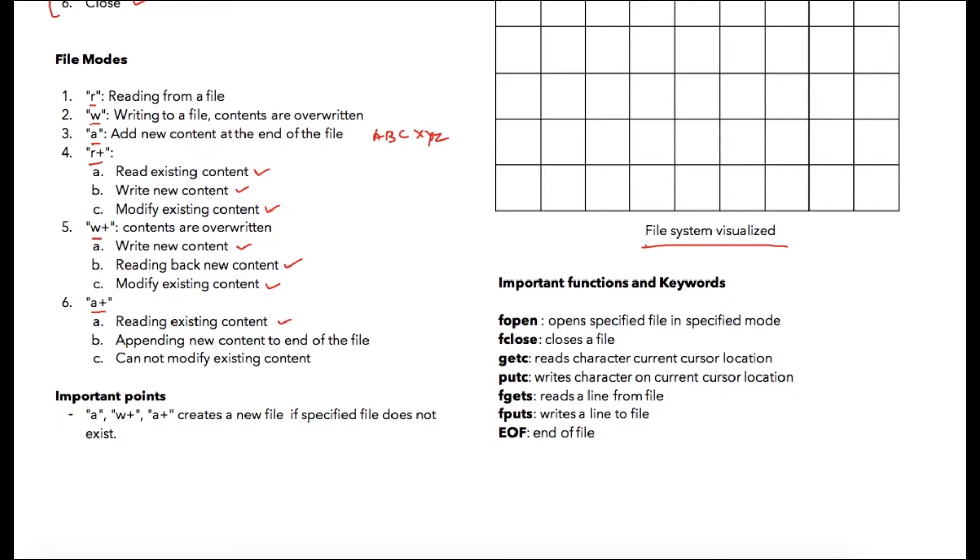Then finally there is another mode as a+, in which you can read existing content, you can append new content at end of the file, but in case of a+ you cannot modify existing content. So these are six different file modes which are available to us in C language. You can use this mode depending on your coding requirements. Additional important points to remember are mode a, w+, and a+ creates a new file if specified file does not exist. So there won't be any prompt as such, those files will be created by the compiler.